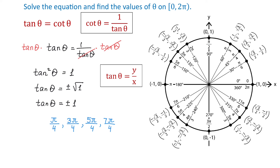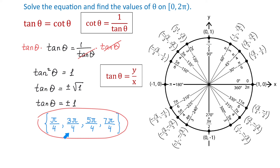We will put these inside braces as a solution set. The values of theta are pi over 4, 3 pi over 4, 5 pi over 4, and 7 pi over 4.